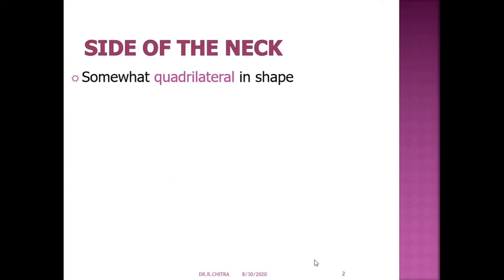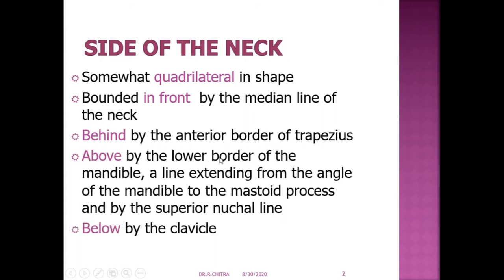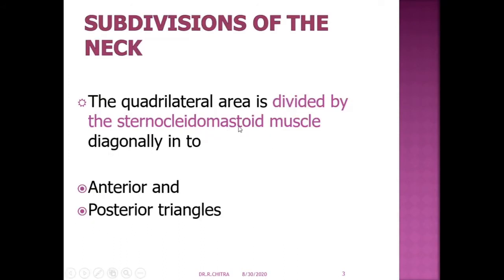The side of the neck is somewhat quadrilateral in shape, bounded in front by the median line of the neck, behind by the anterior border of the trapezius, above by the lower border of the mandible and a line extending from the angle of the mandible to the mastoid process and by the superior nuchal line, and below by the clavicle. In this side of the neck, we divide it into two triangles by the sternocleidomastoid muscle. This quadrilateral area is subdivided by the sternocleidomastoid muscle diagonally into anterior and posterior triangles.